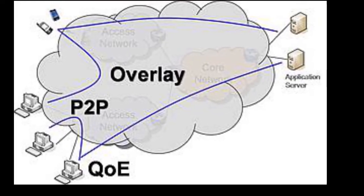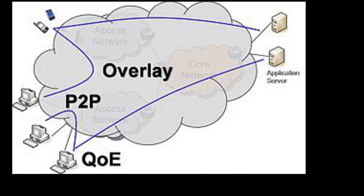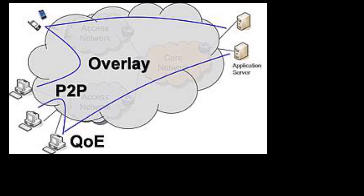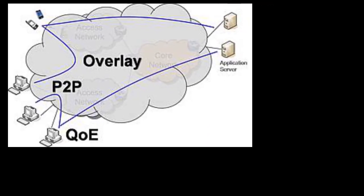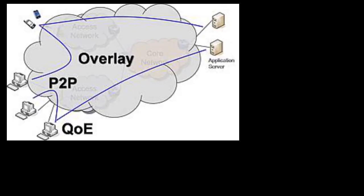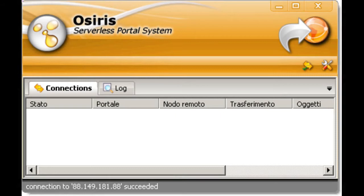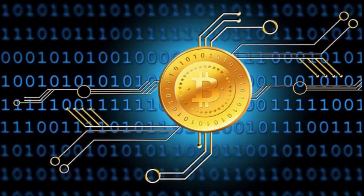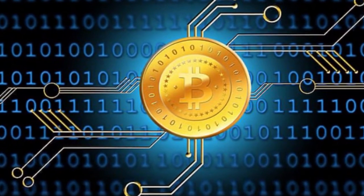Some proprietary multimedia applications use a peer-to-peer network along with streaming servers to stream audio and video to their clients, including peer-casting for multicasting streams. Pennsylvania State University, MIT, and Simon Fraser University are carrying on a project called LionShare designed for facilitating file sharing among educational institutions globally. Osiris is a program that allows users to create anonymous and autonomous web portals distributed via peer-to-peer network. Energy trading companies such as Power Ledger and Bob Labs employ peer-to-peer energy trading platforms. Bitcoin and alternatives such as Ether, NXT, and Peercoin are peer-to-peer based digital cryptocurrencies.